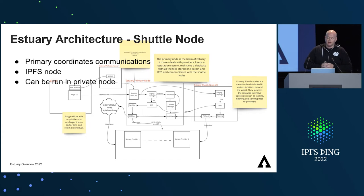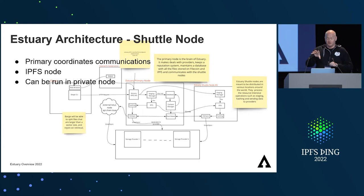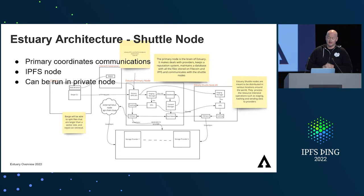Shuttles are how we horizontally distribute payloads into Estuary. The primary node can instruct shuttles to talk to each other as IPFS nodes. Shuttles are actually full IPFS nodes, and they can be co-located with the data, which is handy if you're pushing a lot of data up to certain areas of the globe.